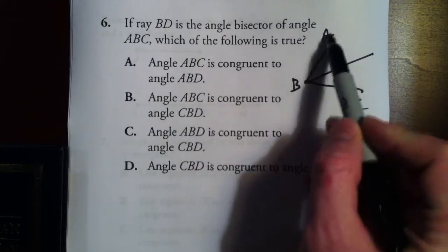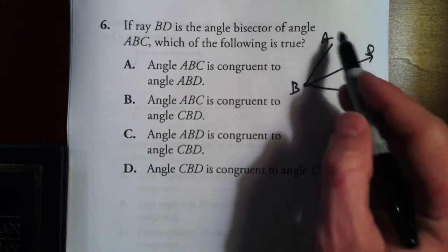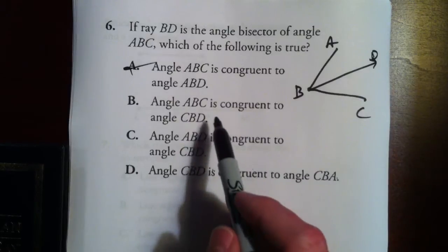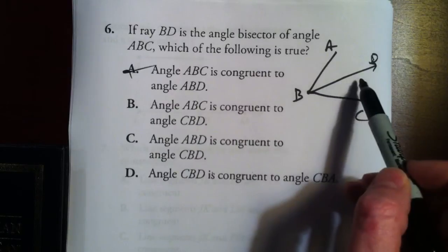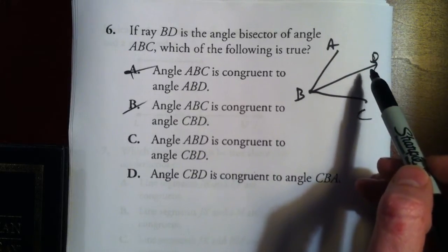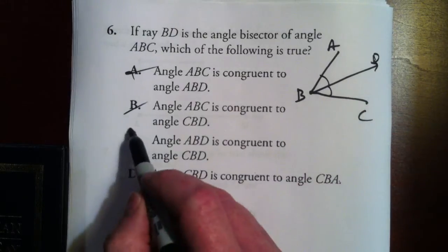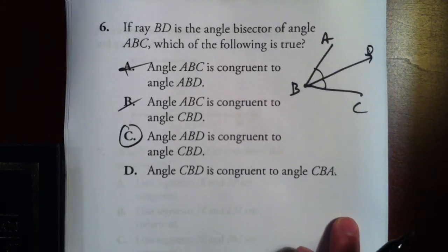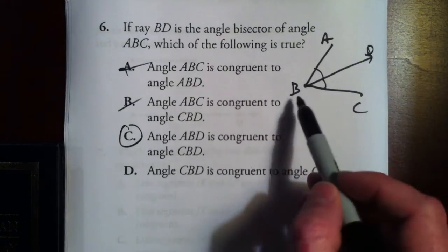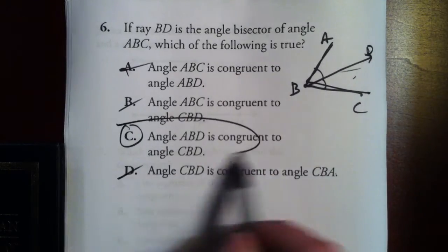Angle ABC congruent to ABD? This cannot possibly be the same size as the entire thing, so let's get rid of that. Angle ABC congruent to CBD? That's the same issue — the whole angle can't equal one of its halves. Angle ABD congruent to CBD? If this is a true bisector, that means this angle is congruent to this angle — that looks like a viable solution. Choice D, angle CBD congruent to CBA — this small angle is in no way the same as the entire angle. So C is our answer.